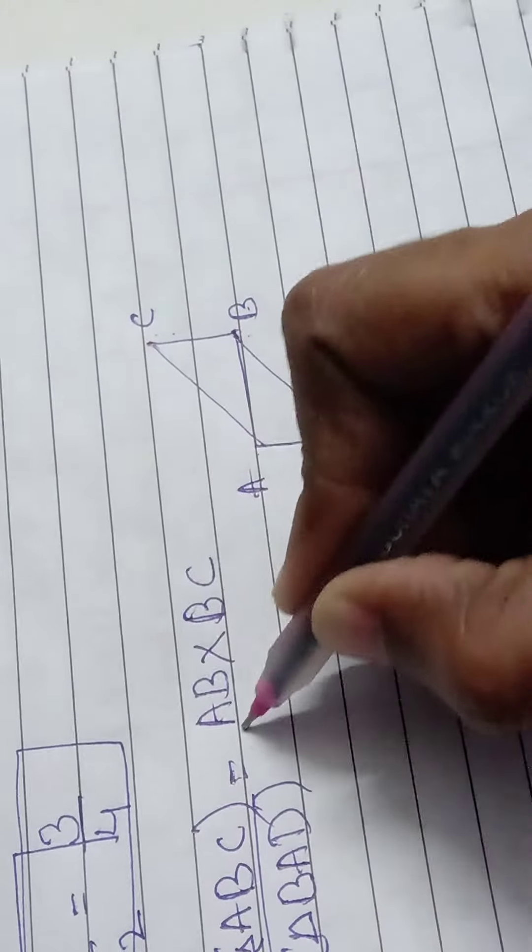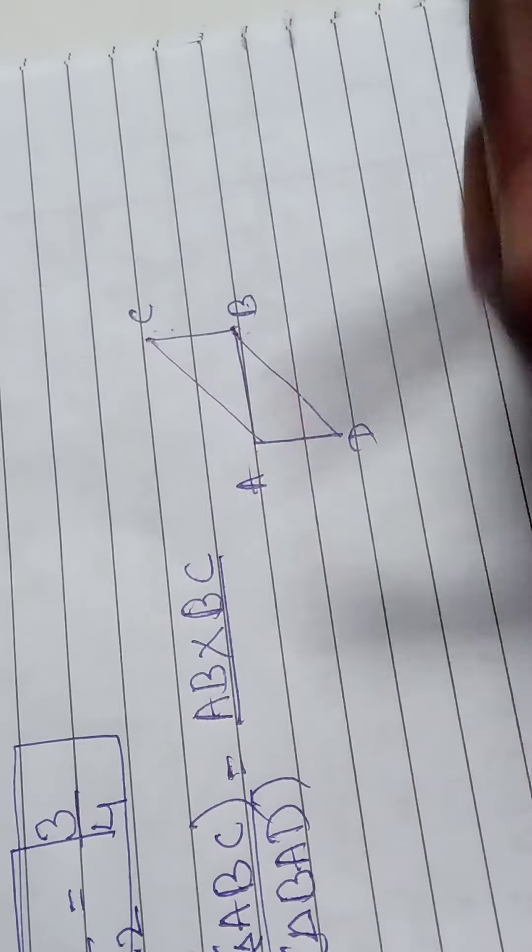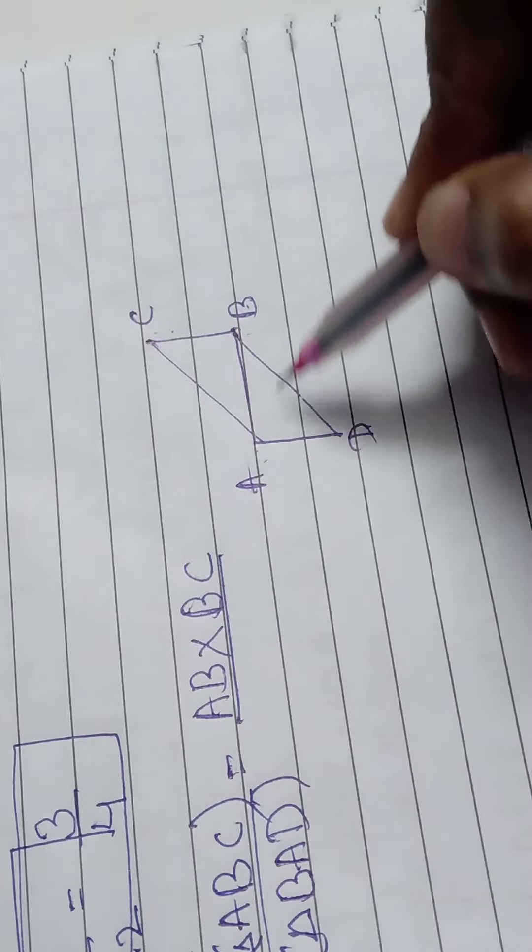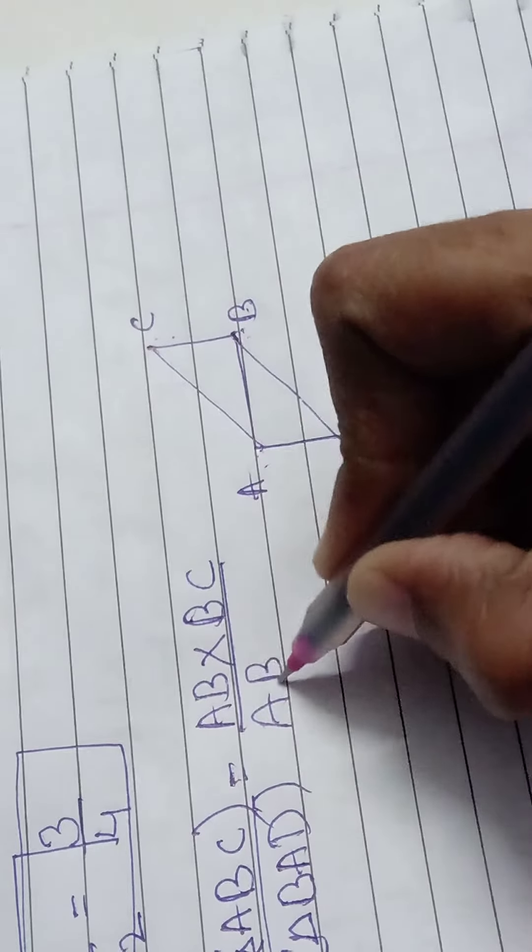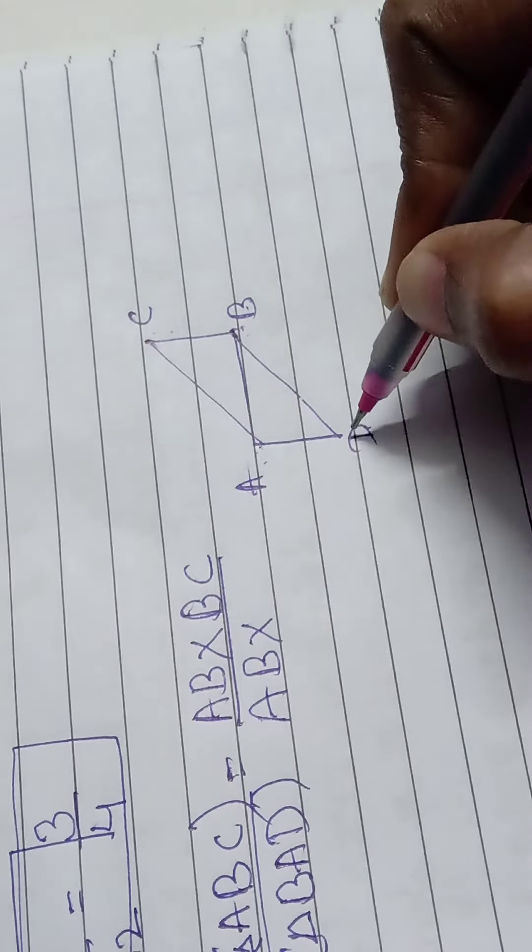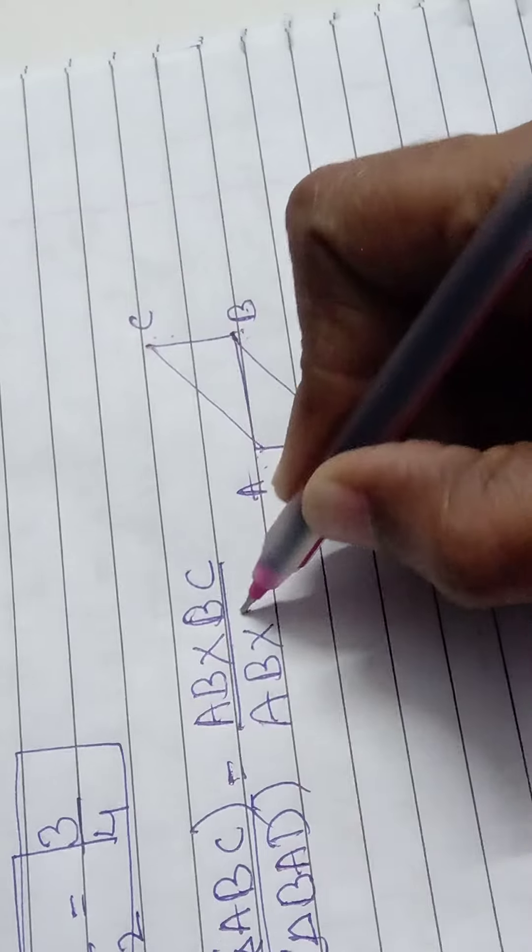In the same way for triangle ADB, what is the base? Same AB. So AB into base into height. What is the height? AD.